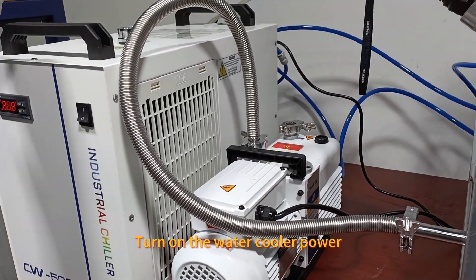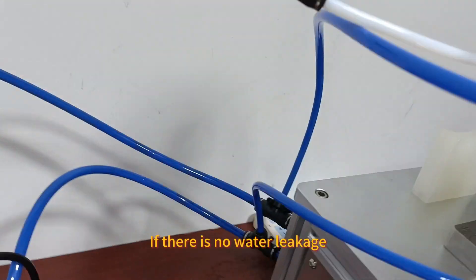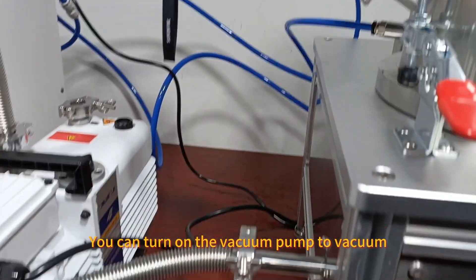Turn on the water cooler power. Check for water leaks. If there is no water leakage, you can turn on the vacuum pump to vacuum.